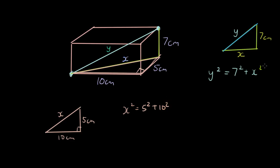What have we noticed? We've noticed here that x squared and x squared is the same thing. This expression can simply be substituted into where x squared is. Then we have y squared is simply equal to 7 squared plus 5 squared plus 10 squared.